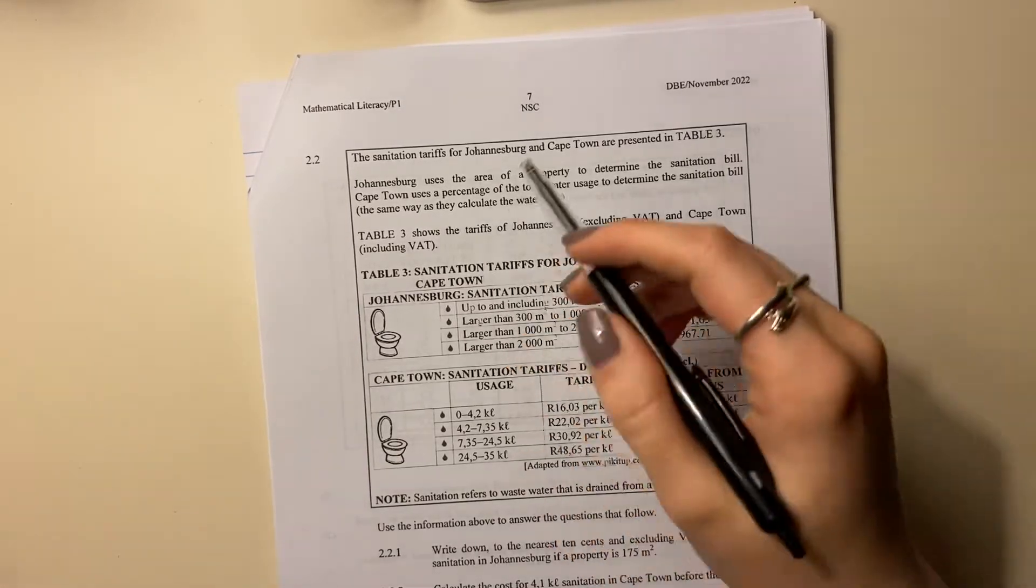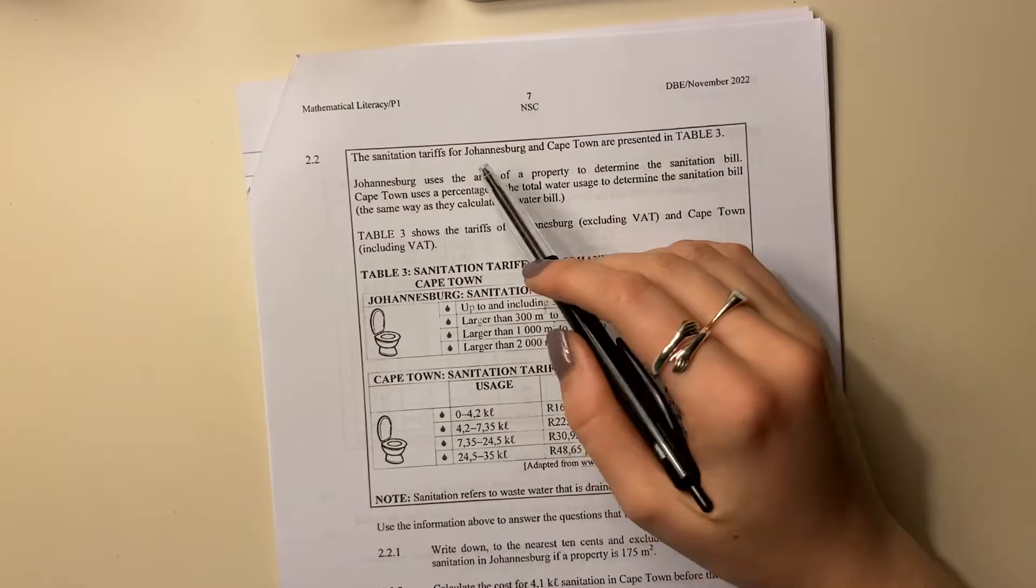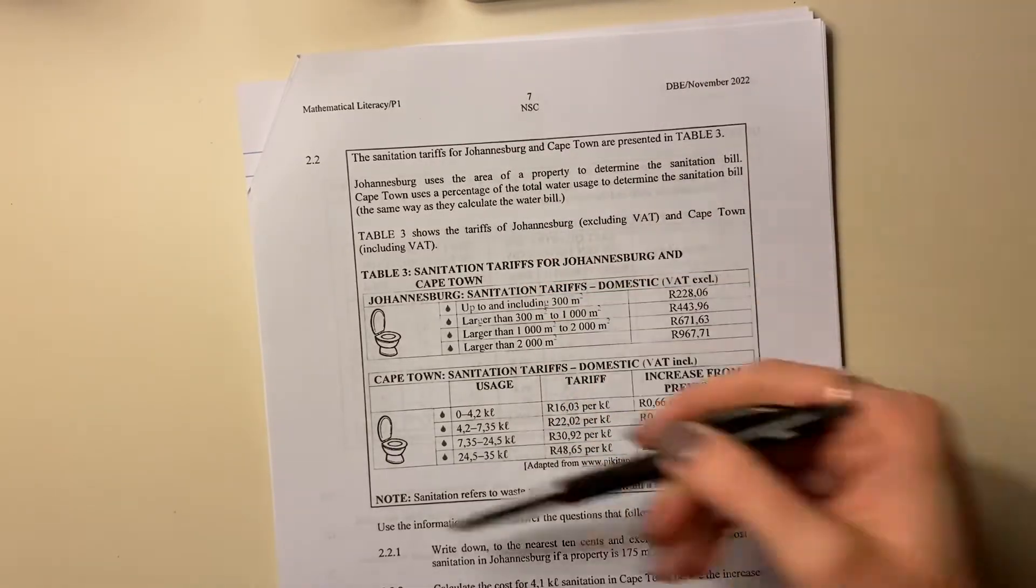Let's move on to question 2.2. The sanitation tariffs for Johannesburg and Cape Town are presented in table three. So here's table three.